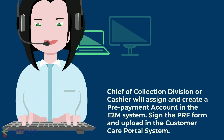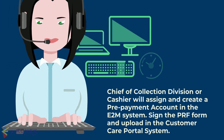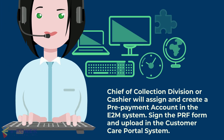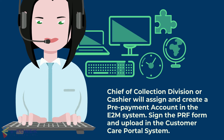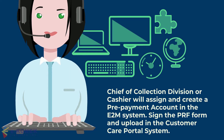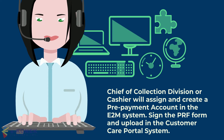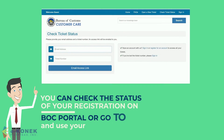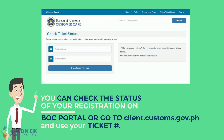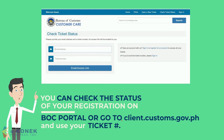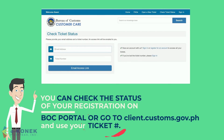The Chief of Collection Divisions or cashier will assign and create a prepayment account in the e2m system, sign the PRF form, and upload it in the Customer Care Portal System. You can check the status of your registration on the BOC port or go to client.customs.gov.ph and use your ticket number.